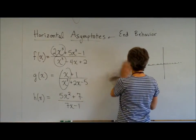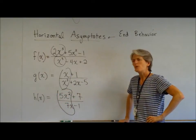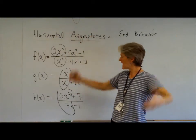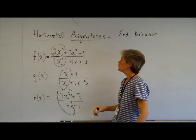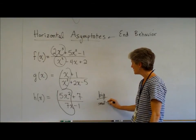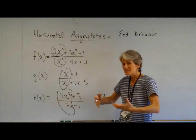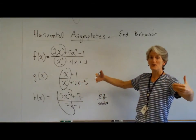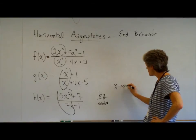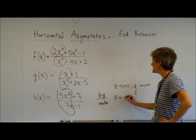One last function, H of X. We can do the same thing, analyzing the controlling terms. So what's growing faster here, the numerator or the denominator? I think I'm going to go with the numerator on this one. X squared is getting bigger a lot faster than just this little X. So it's kind of the flip-flop of the last example. What happens when you divide something huge by something smaller? Well, I think you're going to get something big. And as your X gets bigger and bigger and bigger, your output is going to get bigger and bigger and bigger.